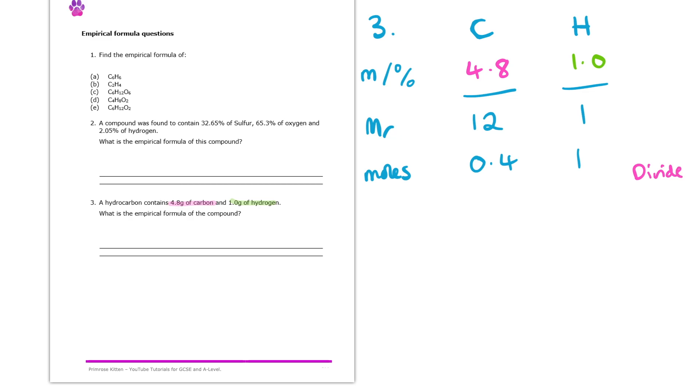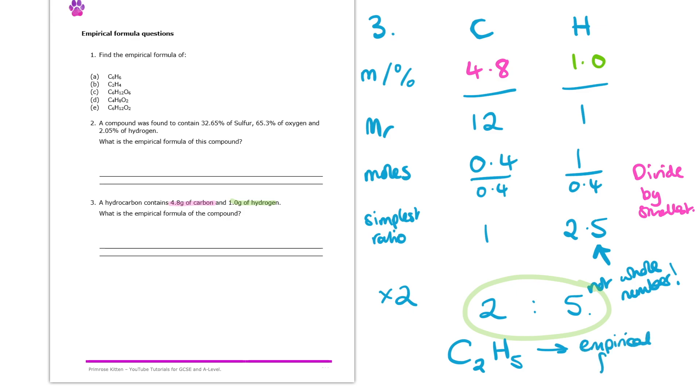So now the next thing we want to do is to get the simplest ratio. And the easiest way to do this would normally be just to divide by the smallest of those two. So in this case 0.4 is smaller, so I'm going to divide each of those numbers by 0.4 to get that simplest ratio. So if I do 0.4 divided by 0.4, I end up getting 1. And if I do 1 divided by 0.4, I get 2.5. Now we've got a little bit of a red flag here because 2.5 is not a whole number. And of course for empirical formula, we need the simplest whole number ratio. The best thing we can do is just double this, and then we will get 2 to 5 instead of 1 to 2.5. So that there's our ratio. It's a 2 to 5 ratio. So our empirical formula in this case is going to be C2H5.